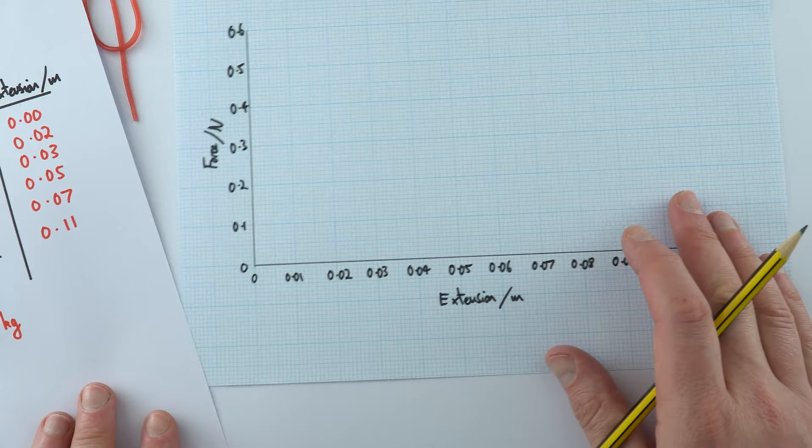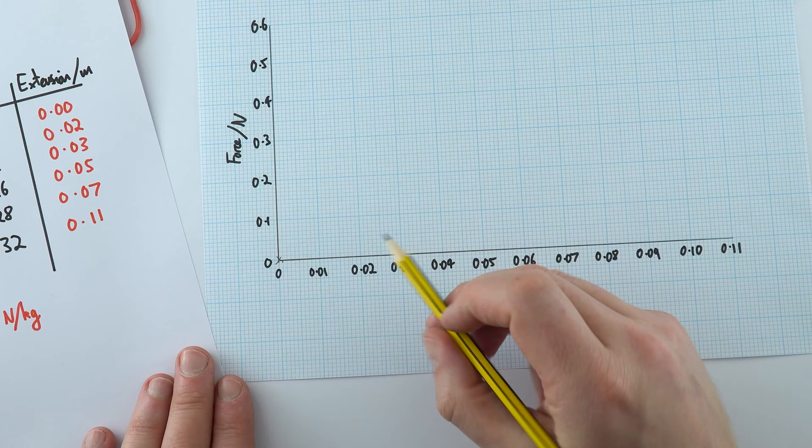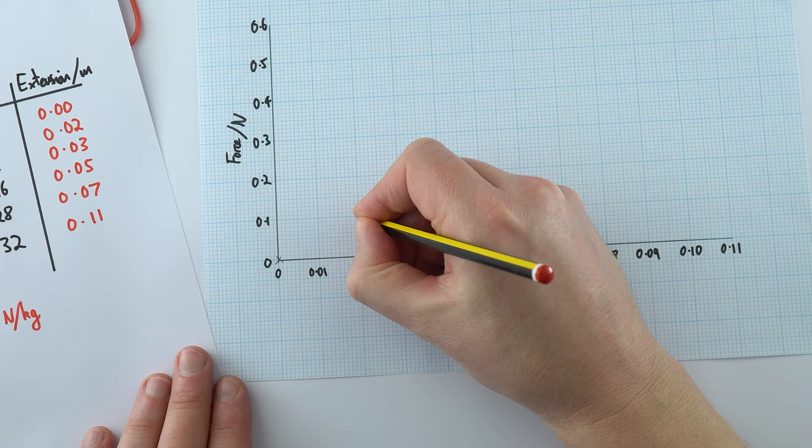So here are my axes here, so we've got force versus extension. What I can now do is start plotting the data. So I'm just going to use a small cross for each piece. So when we've got a force of 0.1 newtons, we've got an extension of 0.02 and so on.